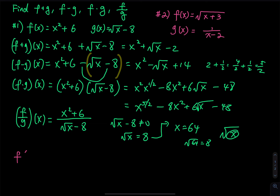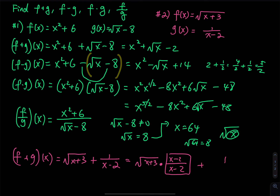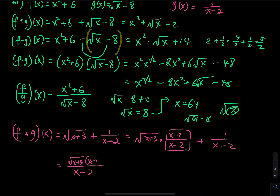Moving on to number two. For f plus g of x, that is equal to the square root of x plus three plus one over x minus two. If you wish, you can find a common denominator. Multiply the top and bottom of the square root of x plus three by x minus two, then add one over x minus two. The result is the square root of x plus three times x minus two, plus one, all over x minus two.